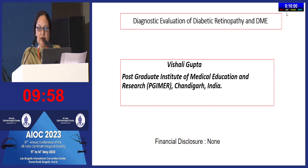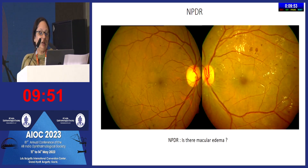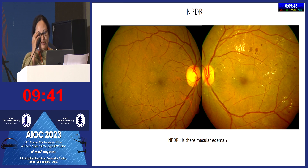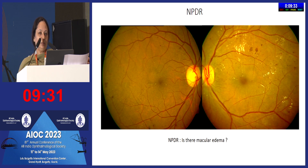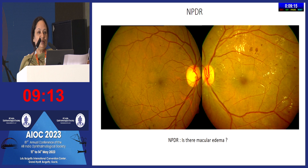The topic I'll cover is the diagnostic evaluation of diabetic retinopathy and DME. Once fundoscopy identifies non-proliferative diabetic retinopathy, the first question to answer is: is there an associated macular edema? The best investigation to answer this immediately is OCT — a simple line scan passing through the fovea.